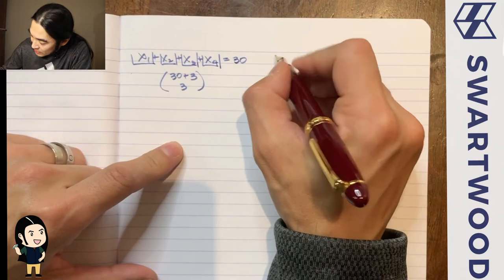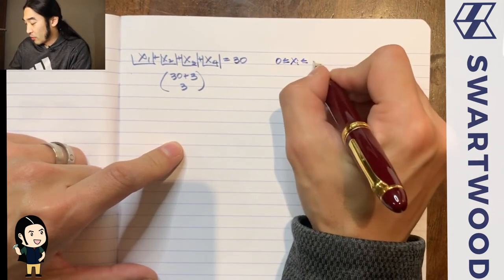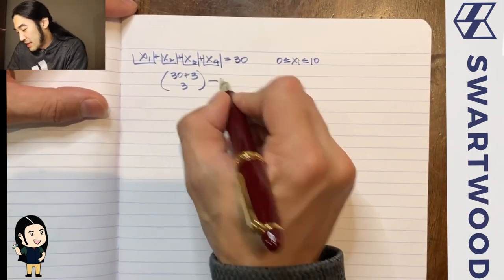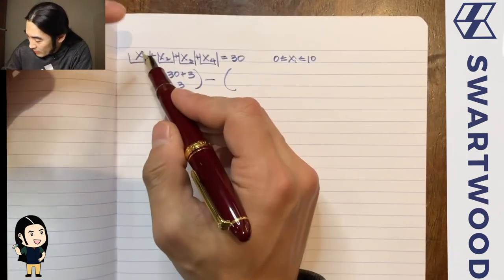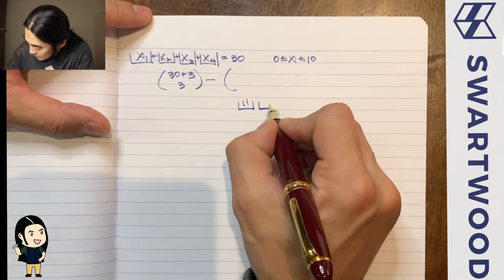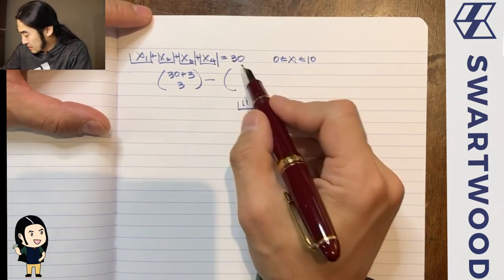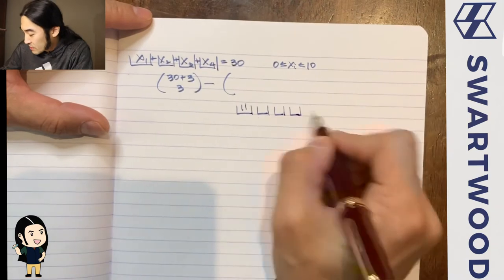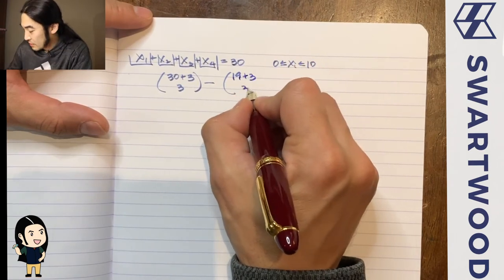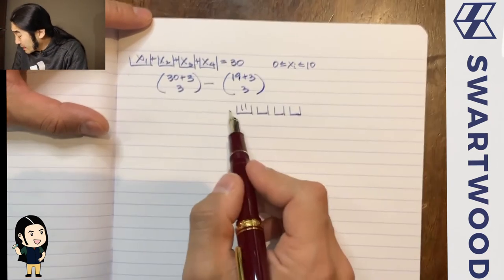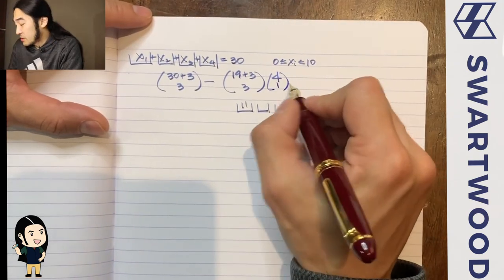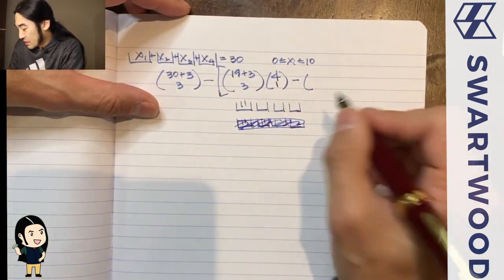Now let's add the constraint that each variable is between 0 and 10. To count bad arrangements, take the leftmost variable and force 11 into it — then place the remaining 19 freely into 4 containers using 3 dividers: 19 + 3 choose 3. Since any one of the 4 variables could be the over-limit one, multiply by 4 choose 1.